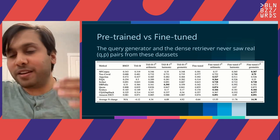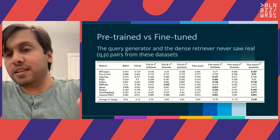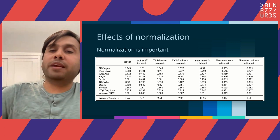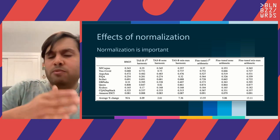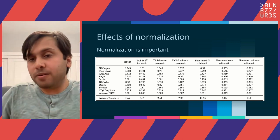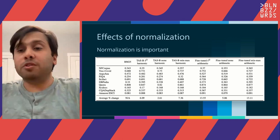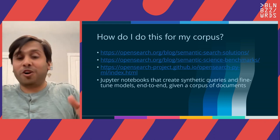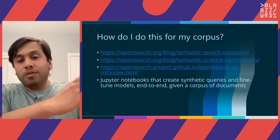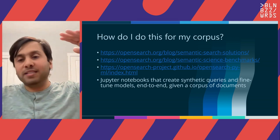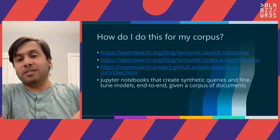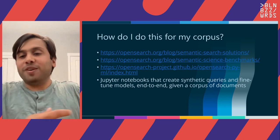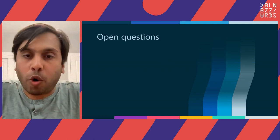We also document the effects of normalization: different normalizations can lead to different results. What we found is that whether it was min-max normalization or L2 normalization didn't really matter, but it did matter that you do use normalization — without normalization, you do not get good results. For future directions: if you're interested in doing this for your corpus, I highly recommend going to the links, downloading the Jupyter notebooks, and just restarting and running all. It will create synthetic queries for your documents and fine-tune the models end-to-end.